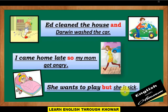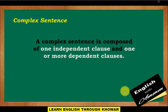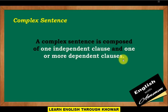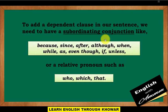Complex sentence: A complex sentence is composed of one independent clause and one or more dependent clauses. To add a dependent clause in our sentence, we need to have a subordinating conjunction like: because, since, after, although, when, while, as, even though, if, unless.